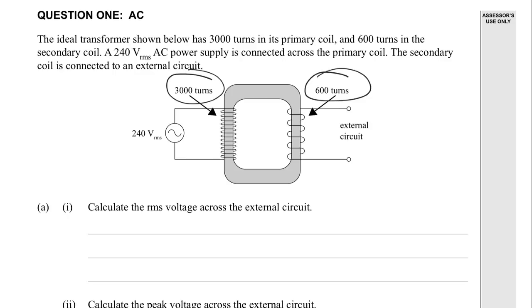240 volt RMS AC power supply connected across the primary coil, secondary coil is connected to an external circuit.